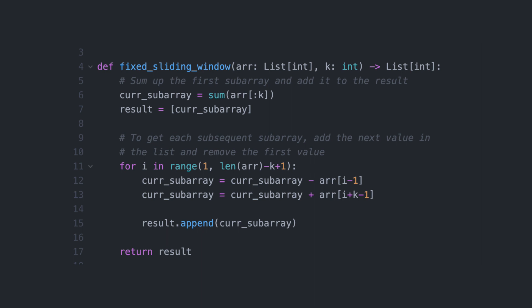In terms of actually coding this up, here's a simple example of what the code might look like. We start by computing the sum of that initial subarray and adding that to our result, and then we iterate through all of the remaining subarrays. As we do that, we remove that initial element and we add the next element and then append it to our result.